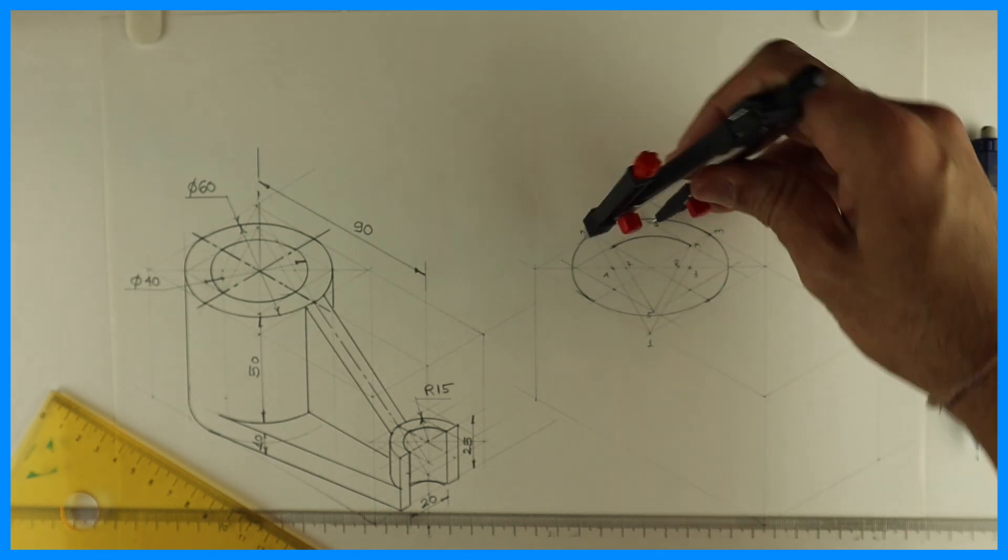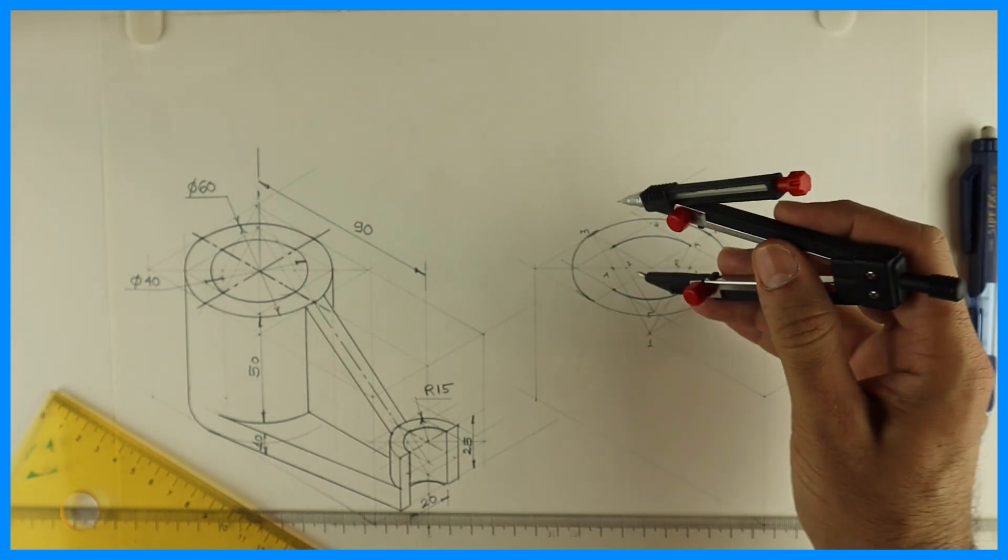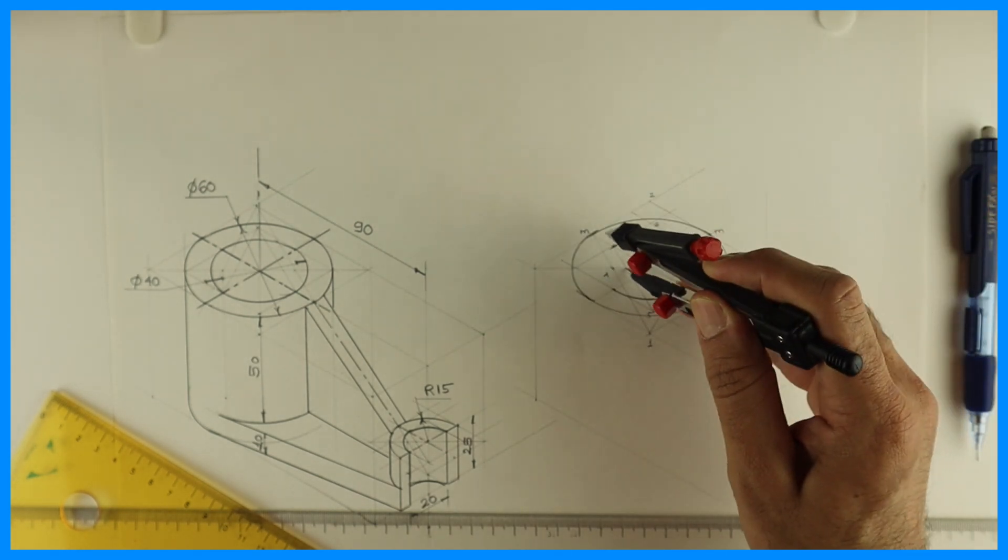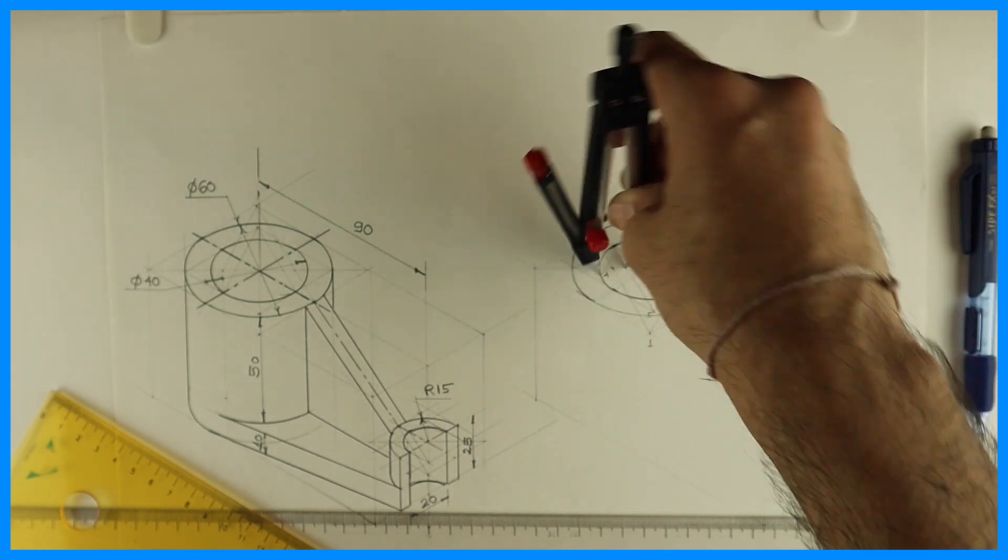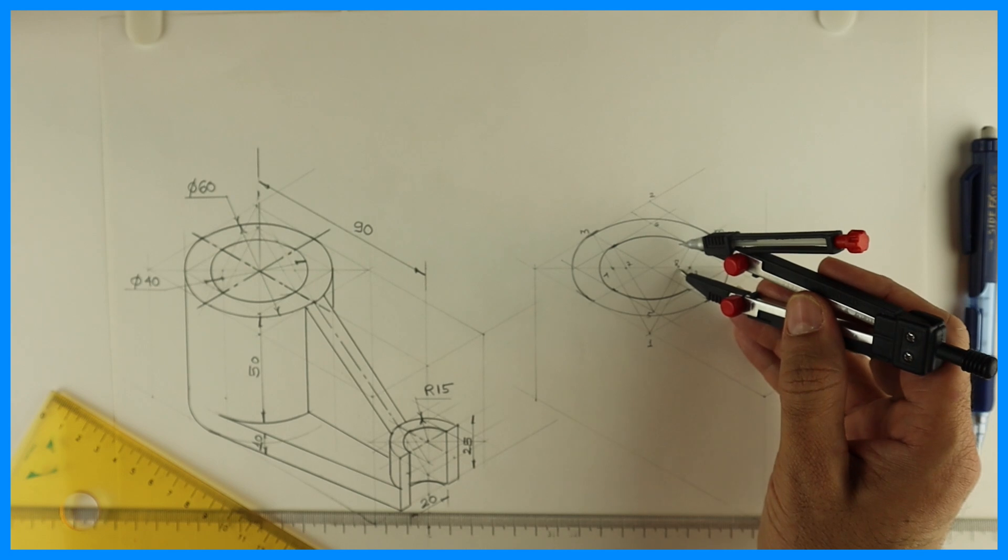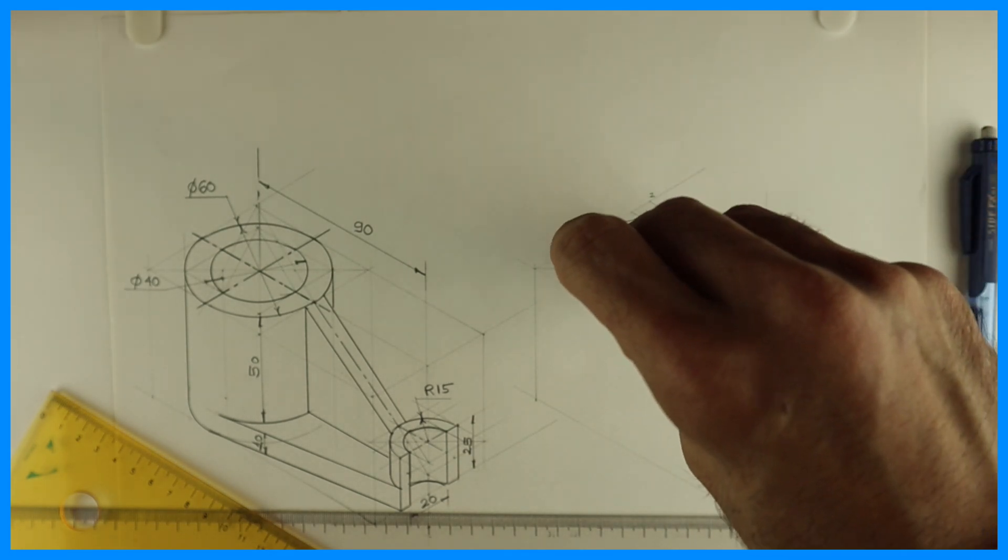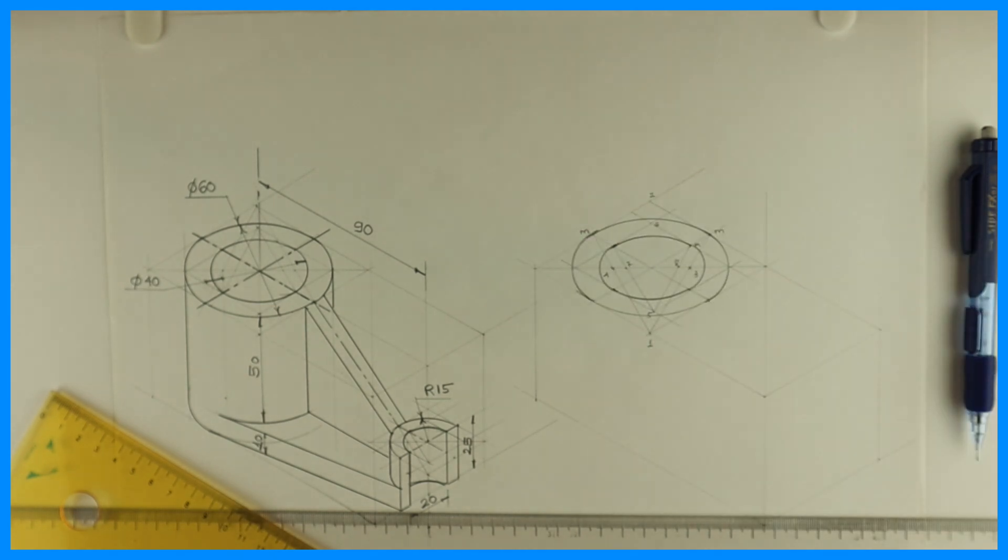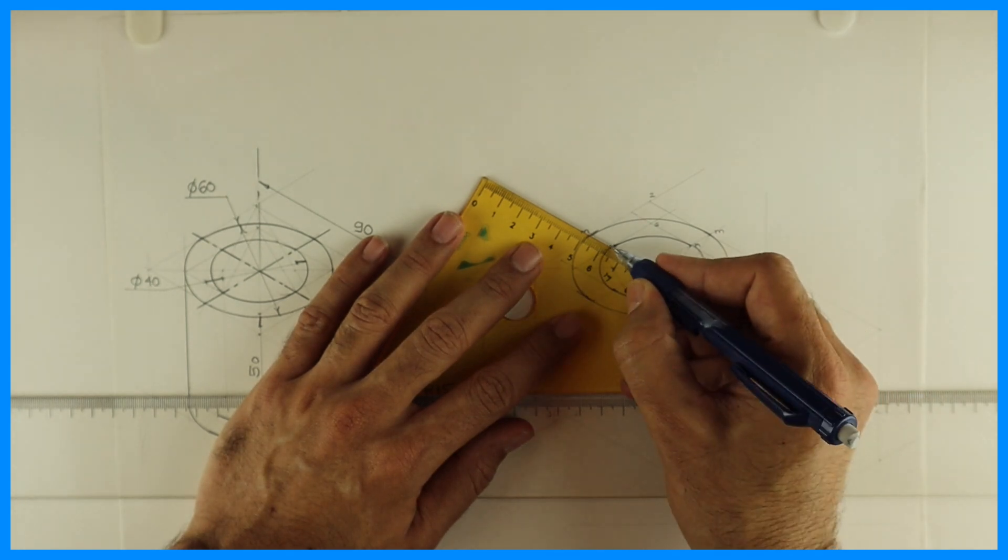Same way from there, six you draw arc. Then from seven, seven to M, and eight to M. So we are done with diameter 40. We can draw the axis line.